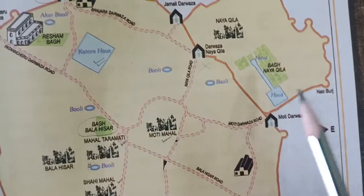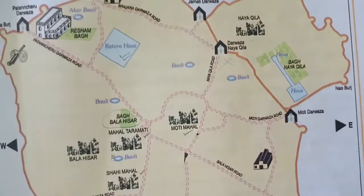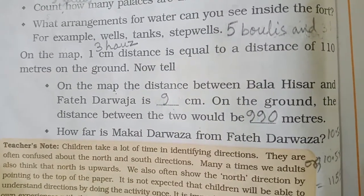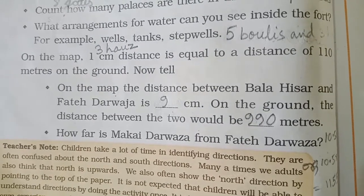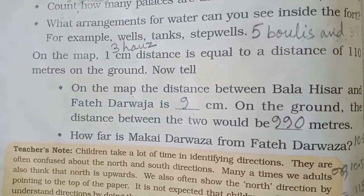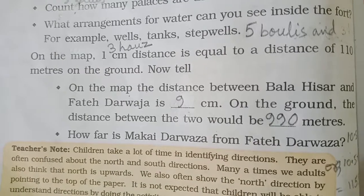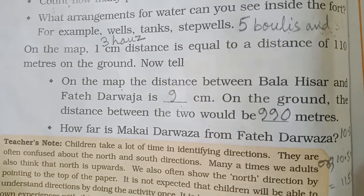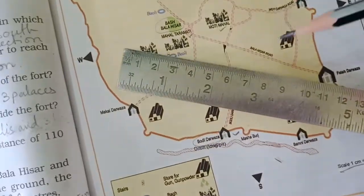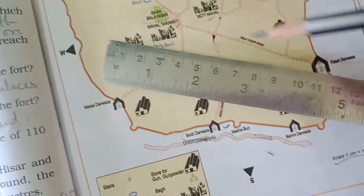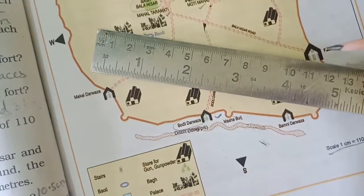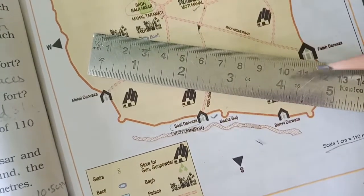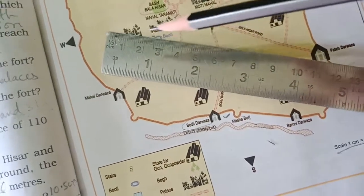On the map, one centimeter distance equals 110 meters on the ground. Now tell: what is the distance between Bala Hisar and Fateh Darwaza on the map? This is Bala Hisar and this is Fateh Darwaza. Measuring from point 2 to point 11, the distance is 9 centimeters.